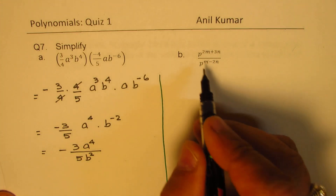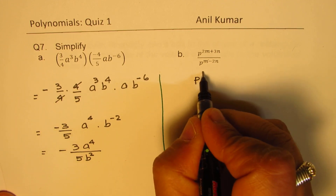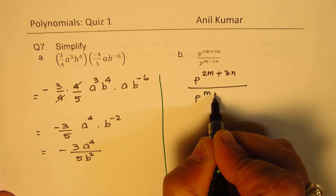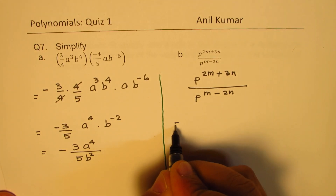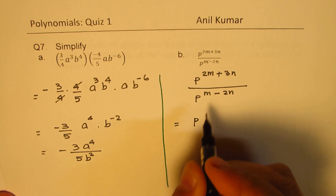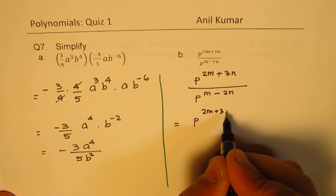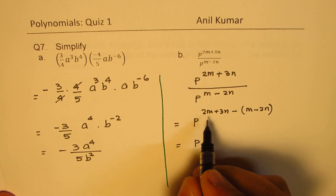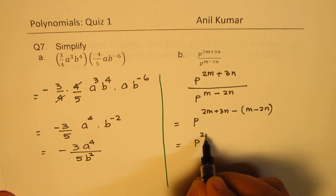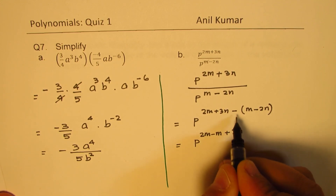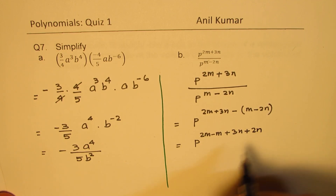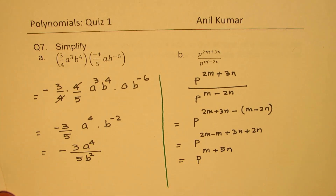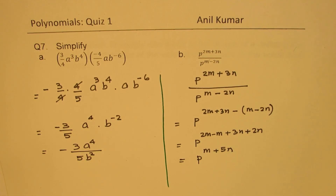Now part b: p^(2m+3n) / p^(m−2n). Using exponent rules, we subtract the exponents: p^[(2m + 3n) − (m − 2n)]. That gives p^(2m − m + 3n + 2n), since the negative times negative becomes positive. So we get the answer p^(m + 5n).